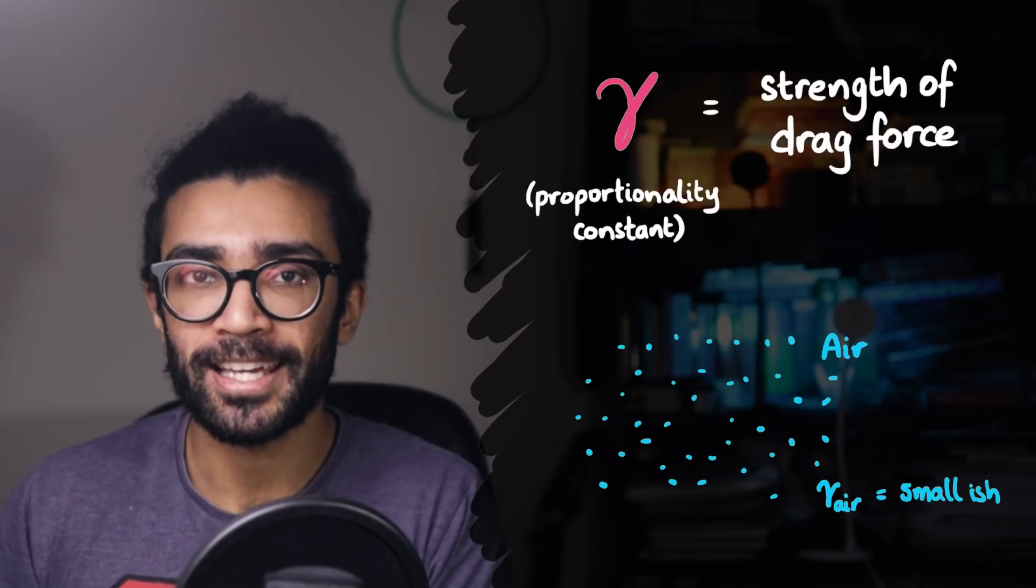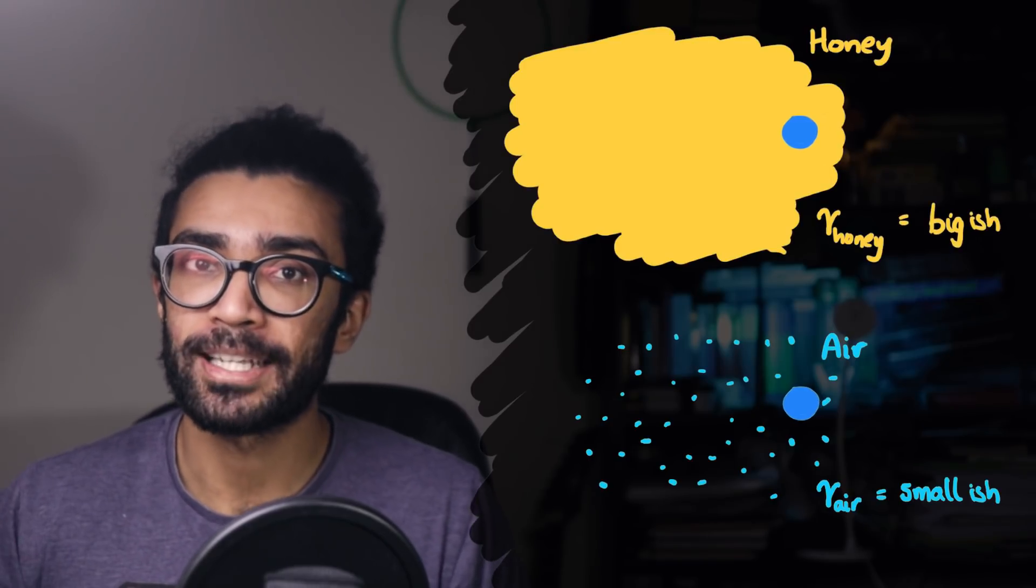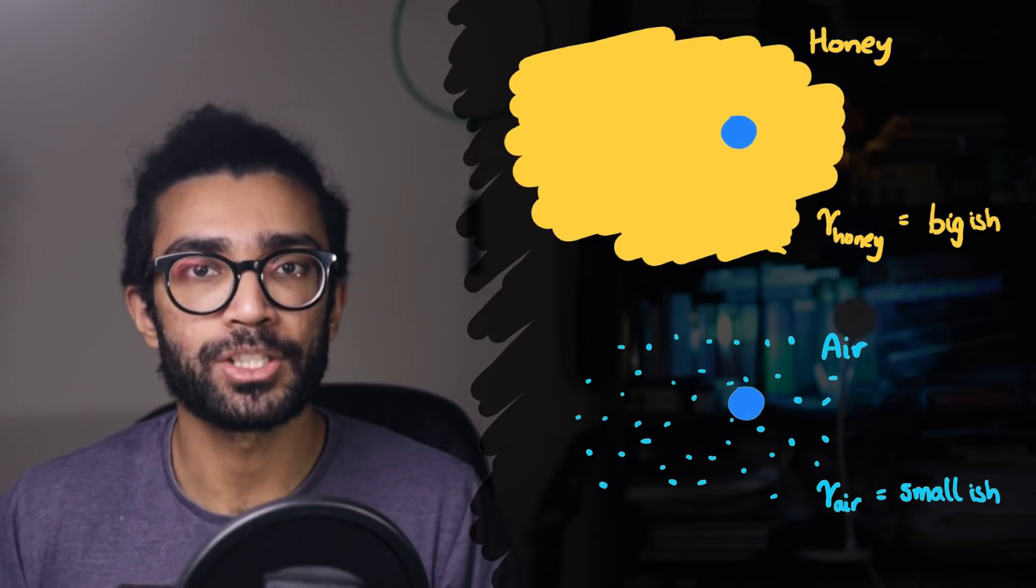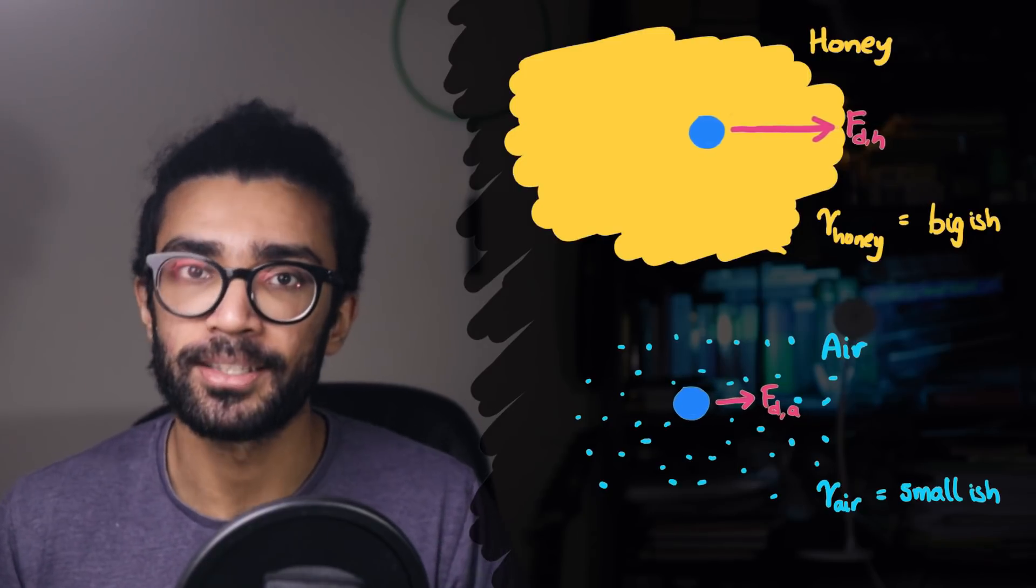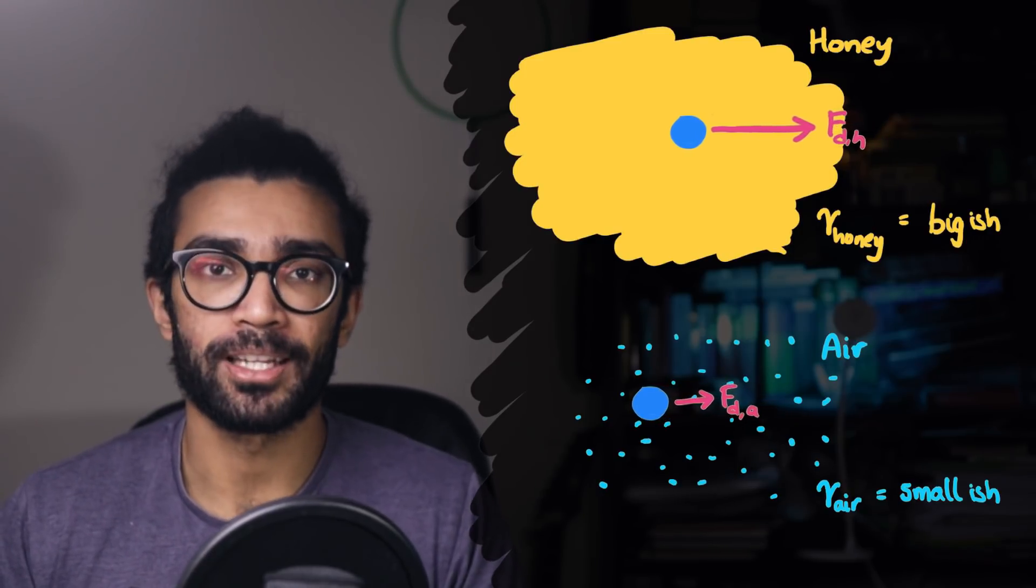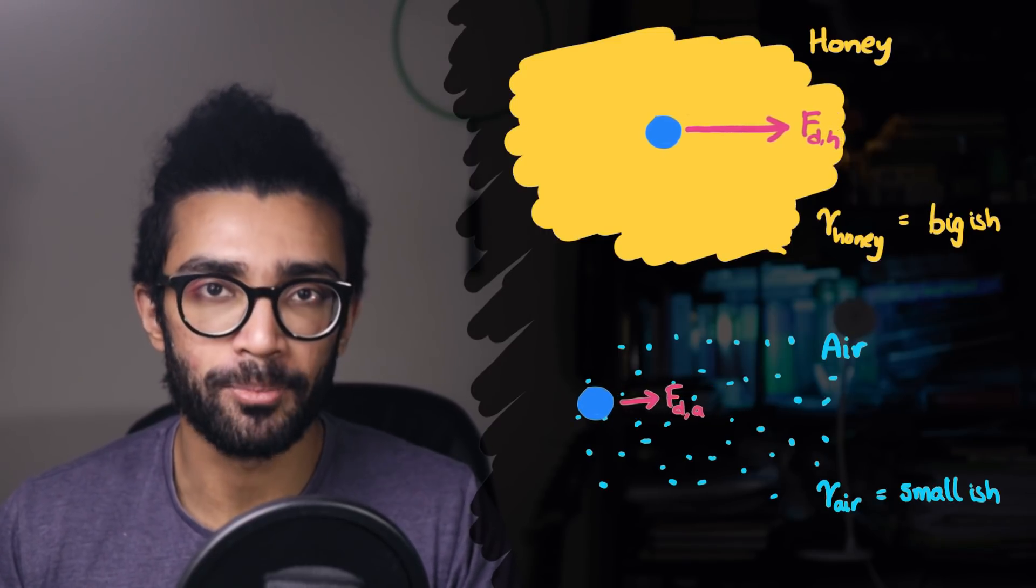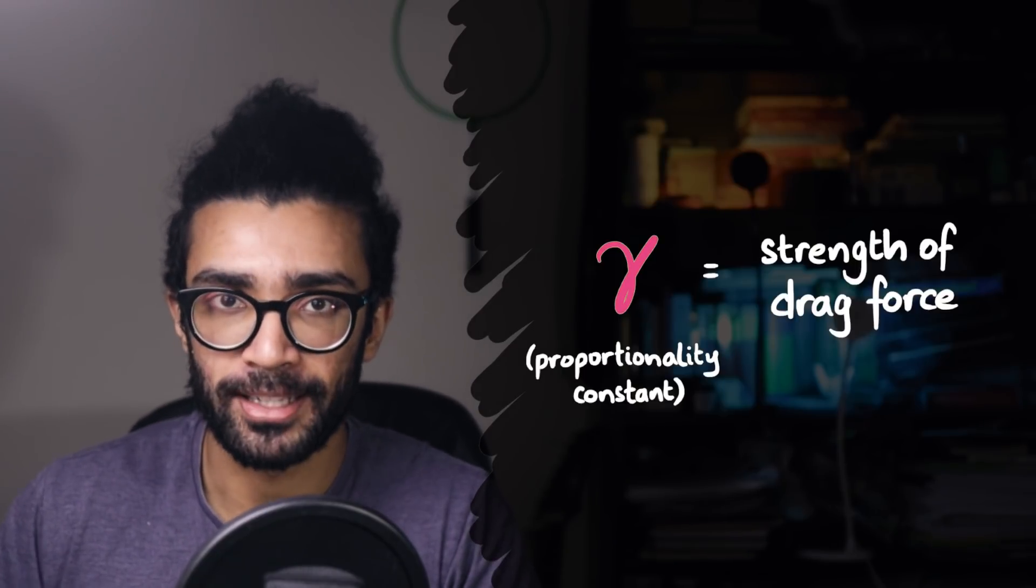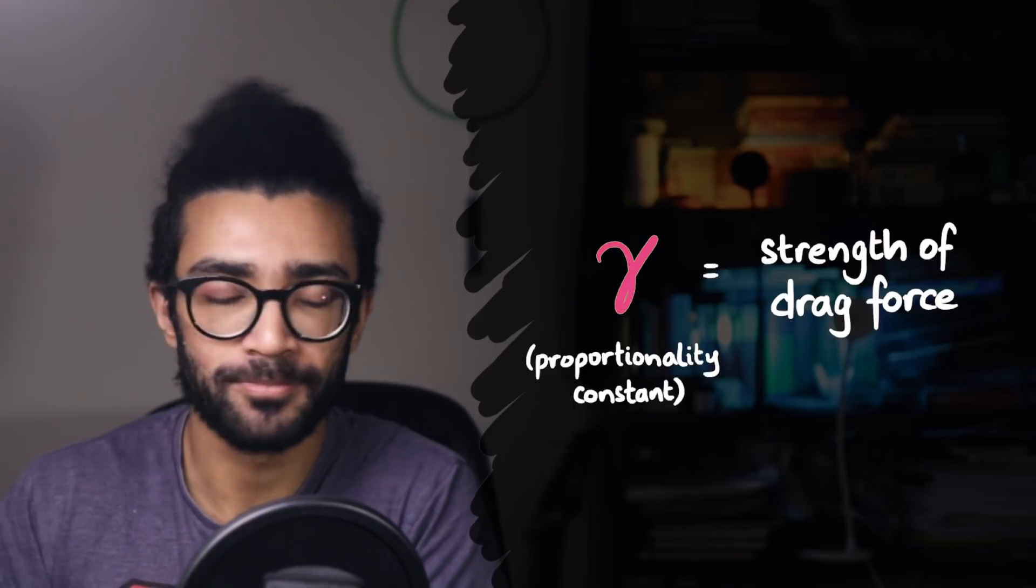However, if we were to replace all of the air around our pendulum with honey, then the pendulum could move at exactly the same speed as the one in air, but it would experience a much larger drag force. Gamma for honey is much bigger than gamma for air. So this is how we quantify something about the air. The value of gamma depends on what medium the pendulum is moving through. Now moving forward, we're just going to call it gamma rather than gamma subscript air, because we're only going to be considering the air pendulum anyway, but you know what's going on.